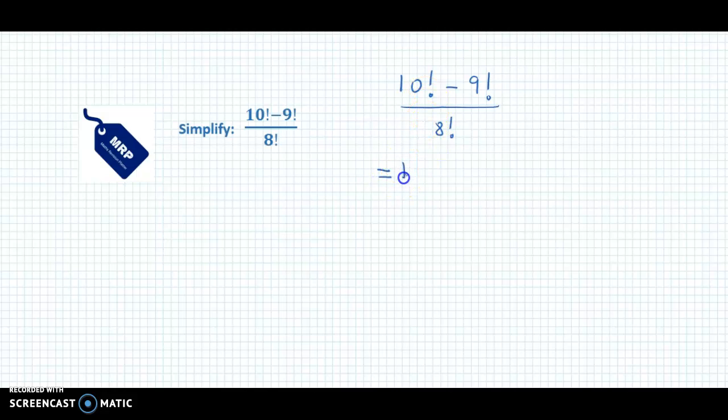So 10 factorial could be written as 10 into 9 into 8 factorial, minus... Similarly, 9 factorial we could split this as 9 into 8 factorial, divided by 8 factorial.